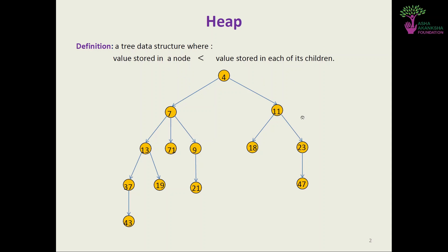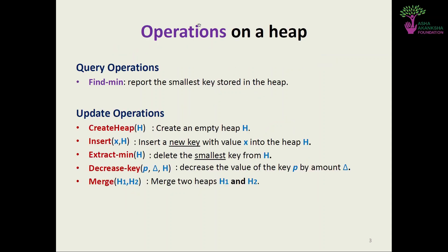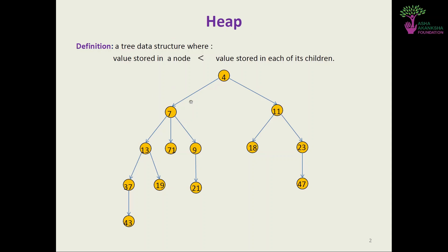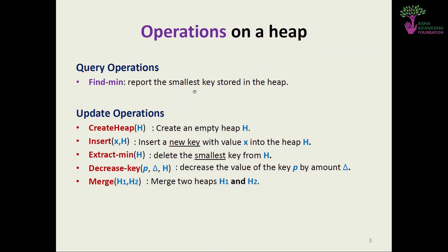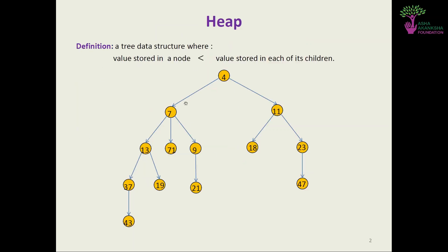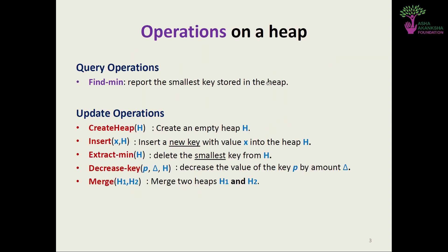For min heaps, the value stored in each node should be less than the value of its children. Now let's discuss the operations we can perform on a heap. The query operation is find-minimum, which reports the smallest key stored in the heap. For a min heap, this is very simple — we just return the value at the root node. For update operations, we have: create heap H (instantiate an empty heap), and insert x into H (insert a new node with value x into an existing heap).